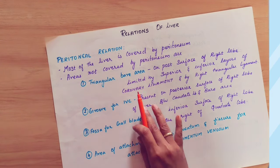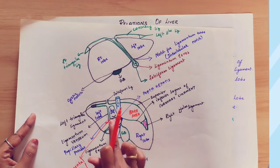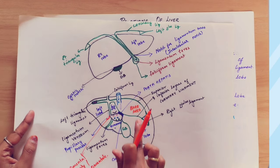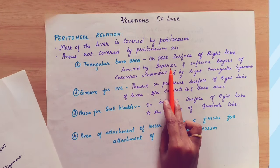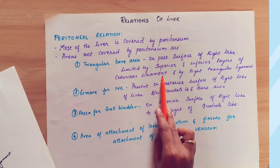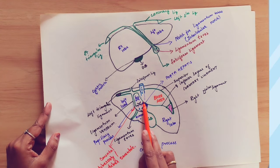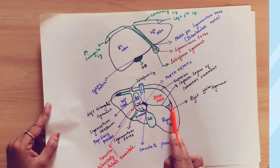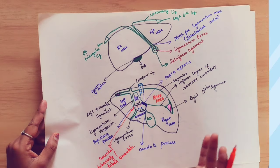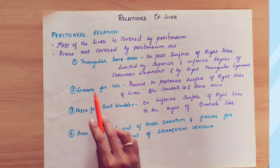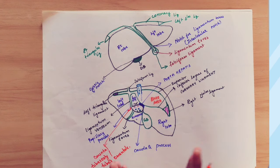The triangular bare area is on the posterior surface of the right lobe. It is limited by the superior and inferior layers of the coronary ligament and by the right triangular ligament — so three ligaments bound the bare area. The second point is the groove for the IVC, on the posterior surface, where the peritoneum is not covered.